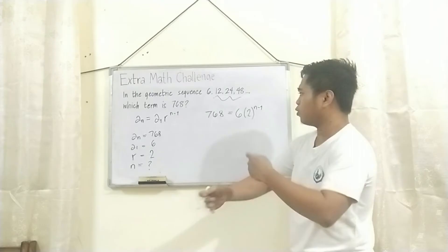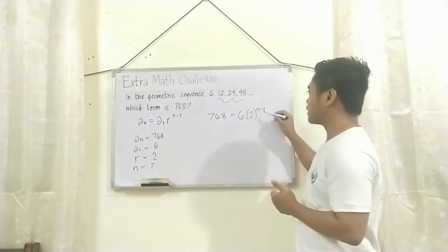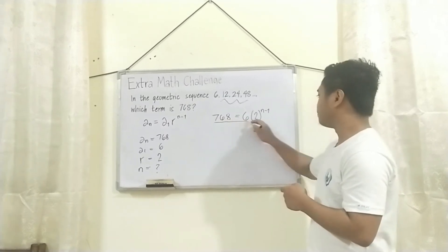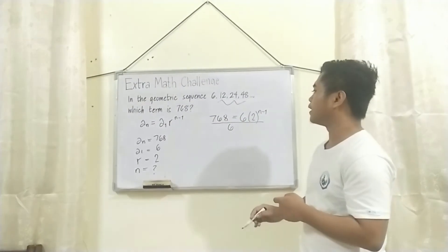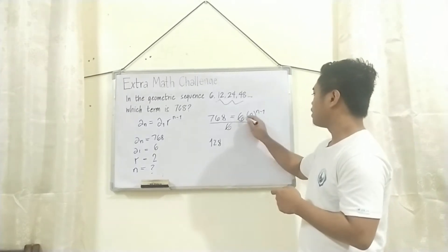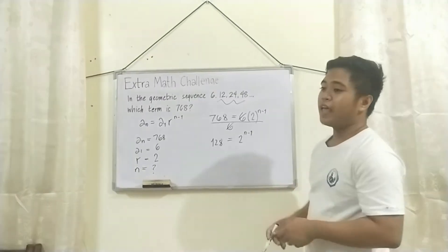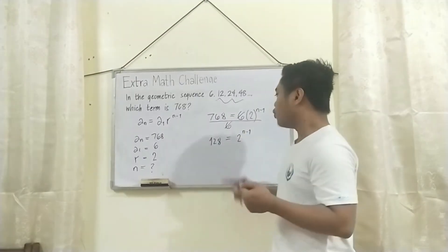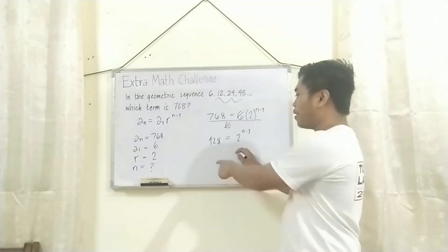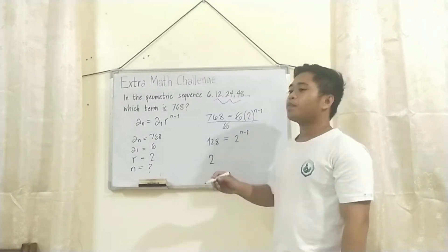Next thing to do, let's simplify this one. We'll divide both sides by 6 kasi dine-deal natin is, yung hinahanap natin si n. Tapos, pwede natin itong ma-divide 6 both sides para ma-simplify natin. 768 divided by 6 will have 128. Dito na side, ang matitira na lang is 2 raised to n minus 1. And kasi nga, yung n yung hinahanap natin, we will set the base of 128 to 2 para mapareha yung base nila.